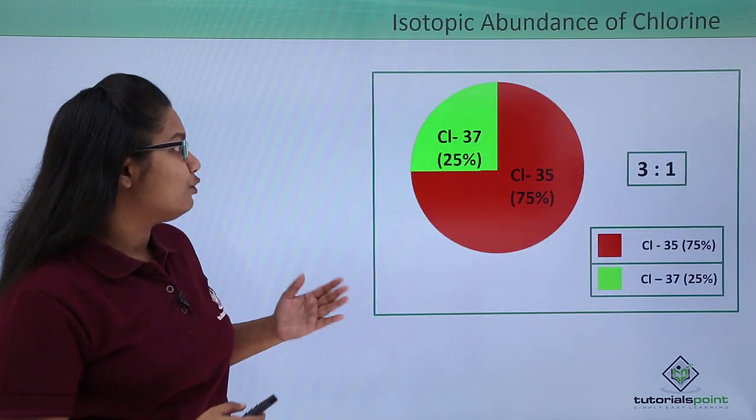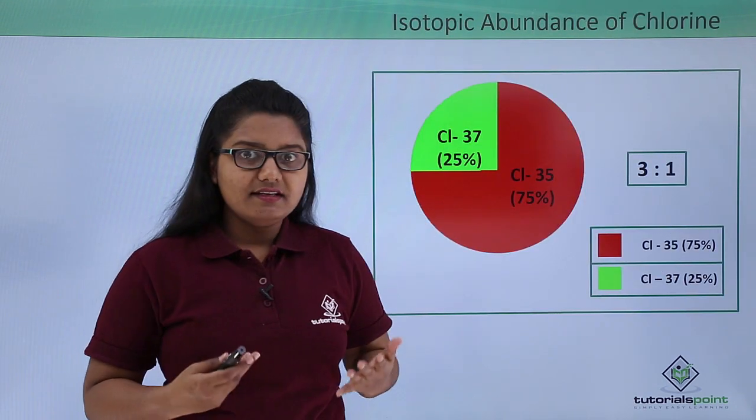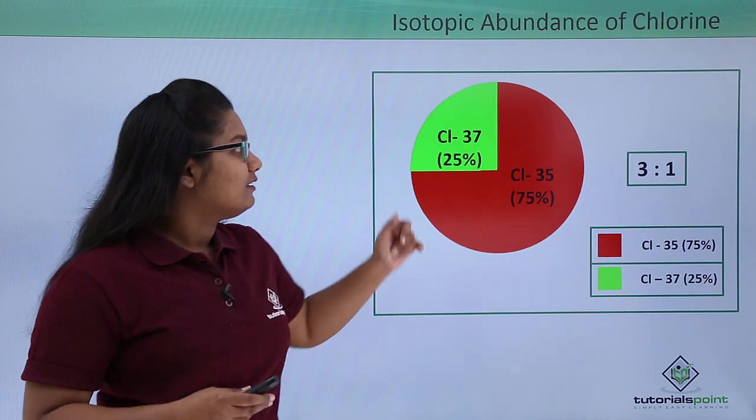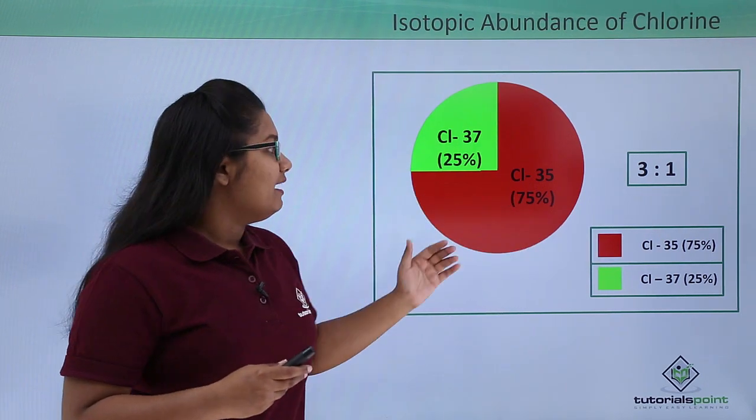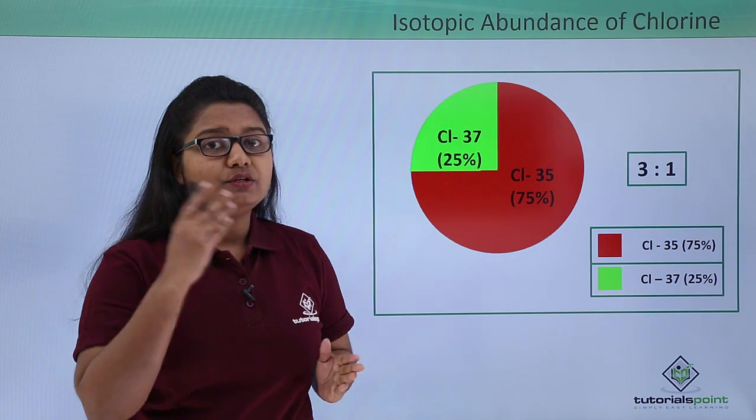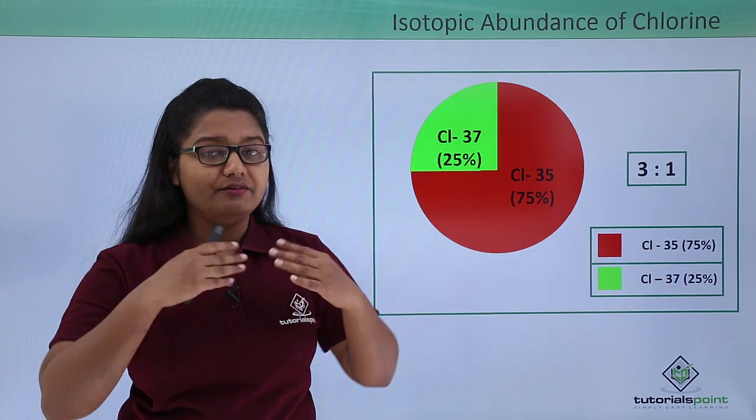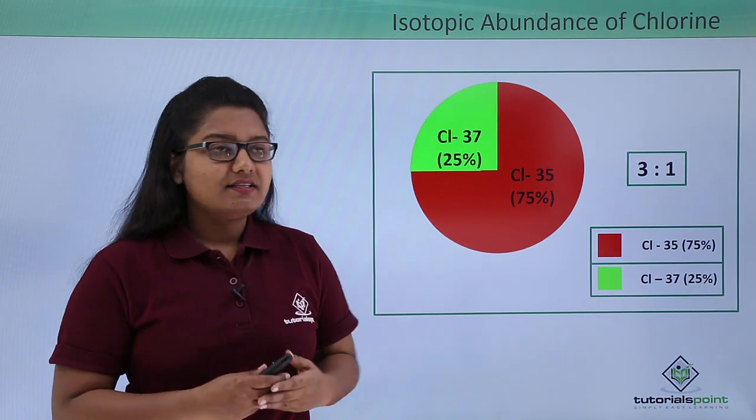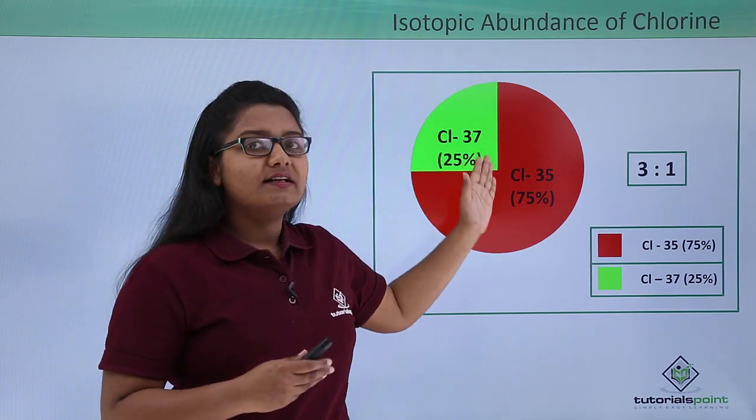Now these two isotopes of chlorine exist in nature in the ratio 3 is to 1. It means that chlorine-35 makes 75 percent of the total chlorine atoms available in this world, and the rest of the 25 percent is made by chlorine-37.